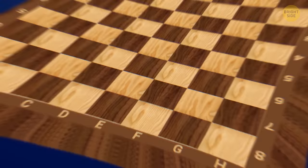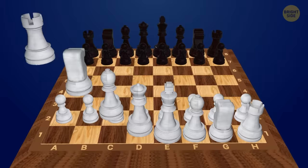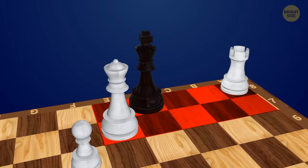There are 32 pieces in total, 16 on each side. If you're playing white, you go first. The entire point of the game is to force the opponent's king into a trap he can't escape from. That's called checkmate.